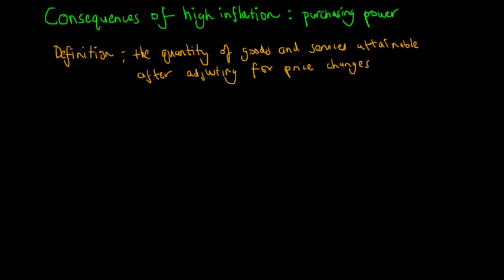We all should know by now that high inflation is bad for the economy. This lecture will talk about how high inflation has consequential effects on our purchasing power. Purchasing power is defined as the quantity of goods and services attainable after adjusting for price changes, and we know the quantity of goods and services attainable has a direct implication to our material living standards.